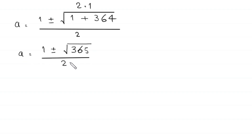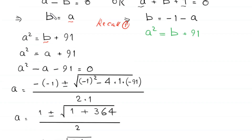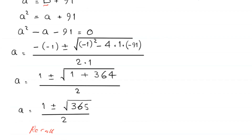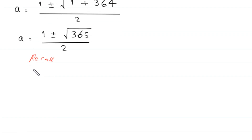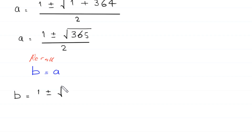So we have two values of a. To find the corresponding values of b, we recall that b is equal to a. Therefore, b will be equal to the same value: 1 plus or minus root 365 over 2.